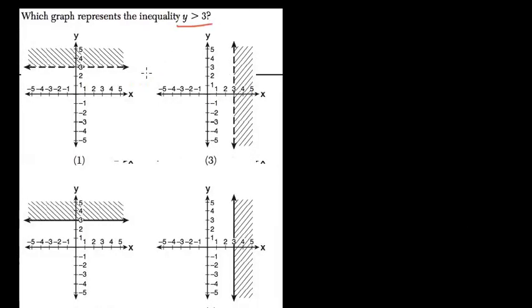Which graph represents y > 3? Well, y > 3 is a horizontal line, and it's choice 1.